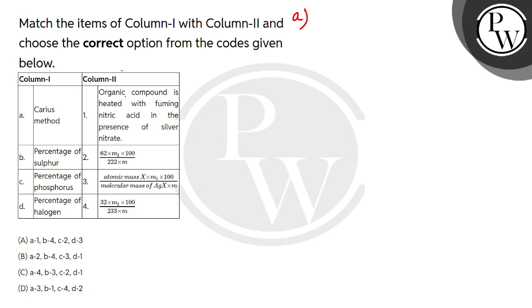If I look from here, what is written in column 2? Organic compound is heated with fuming nitric acid in the presence of silver nitrate. This information is given that you heat with fuming nitric acid and then add silver nitrate. These are the reagents that are used for the estimation of halogen.